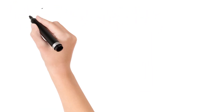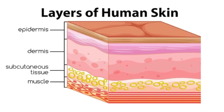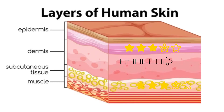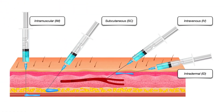Before going to these types of injections, first we should know about the layers of skin. First, there is the epidermis. Below the epidermis, there is dermis. Below that, there is subcutaneous tissue, and under the subcutaneous tissue there will be muscle. Generally, the veins are present in the dermis region.